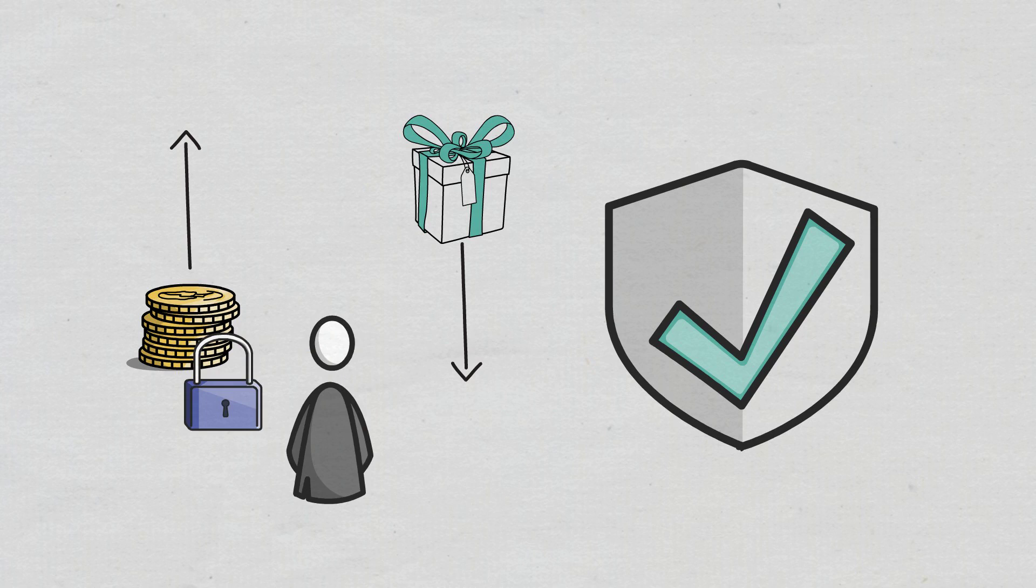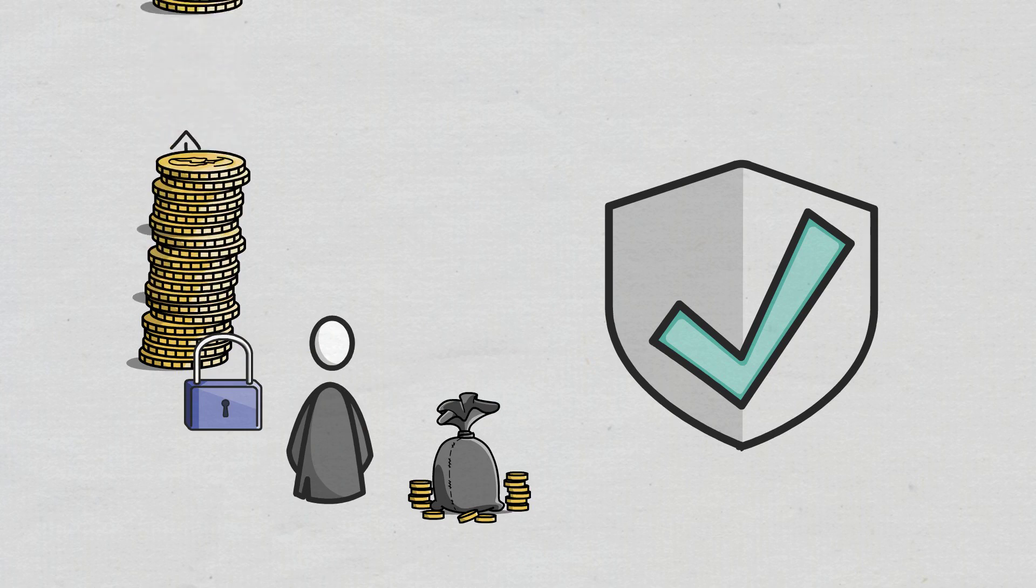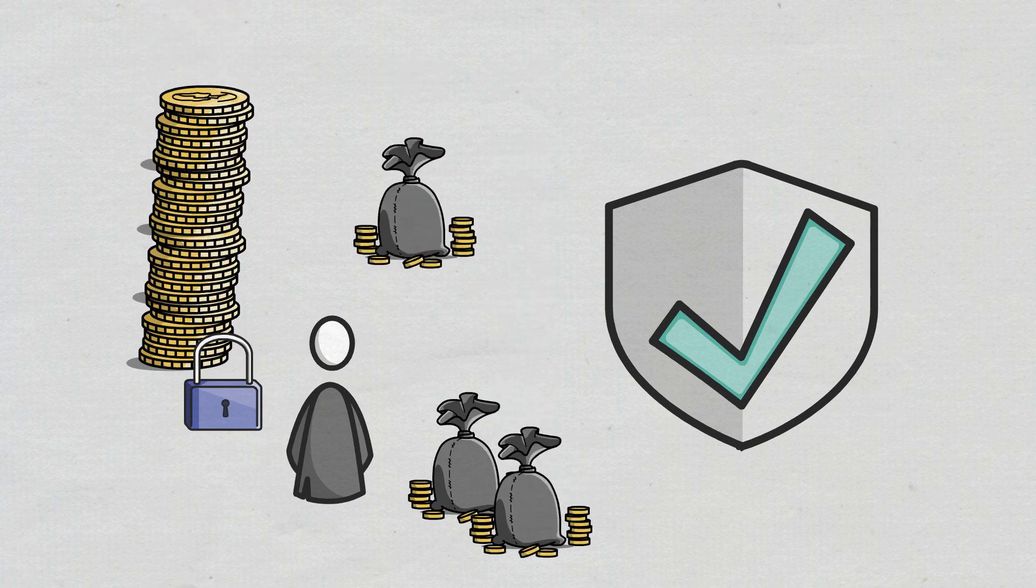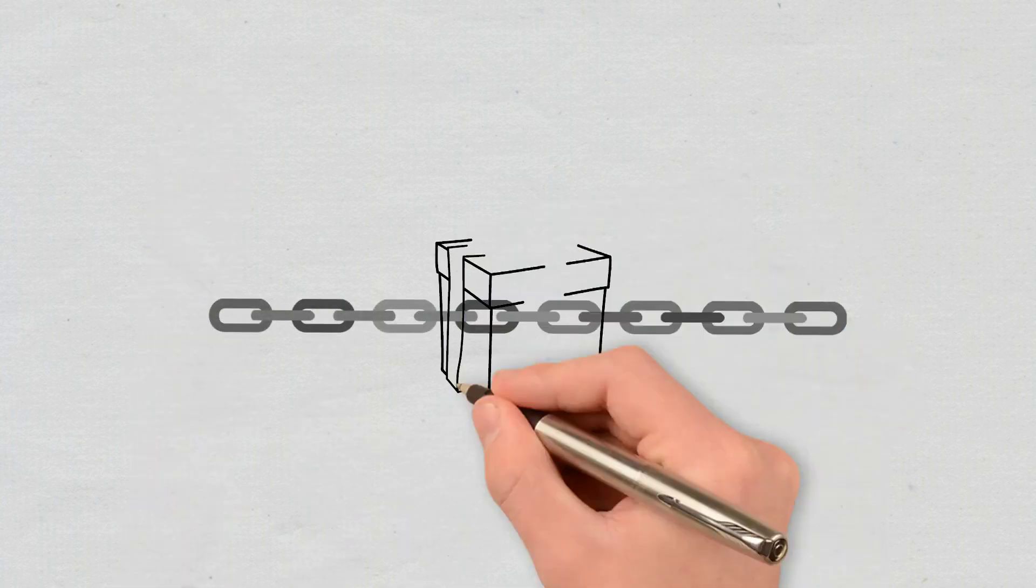As a result, users receive rewards for securing the network in the form of native tokens. The higher the amount of crypto assets that a user pledges, the higher the rewards received. The rewards are distributed on-chain, which means that the entire process of getting the reward is fully automatic.